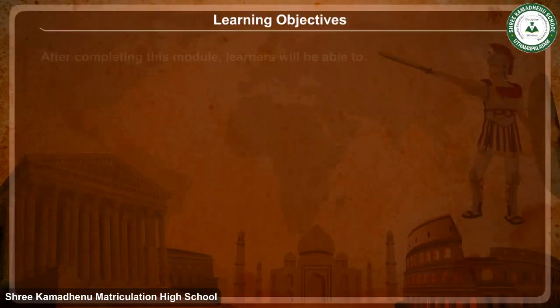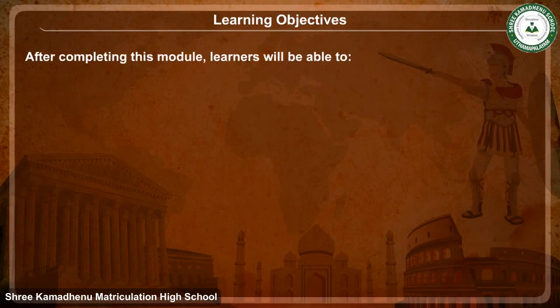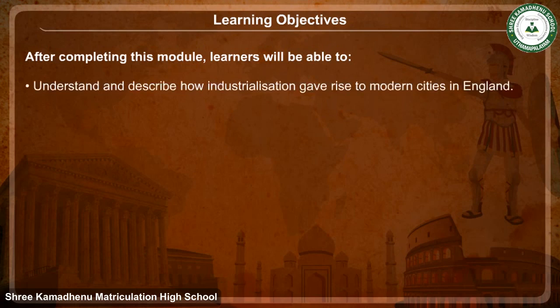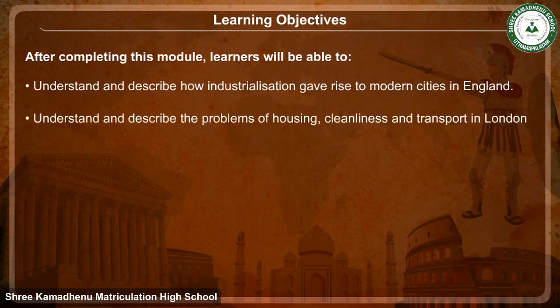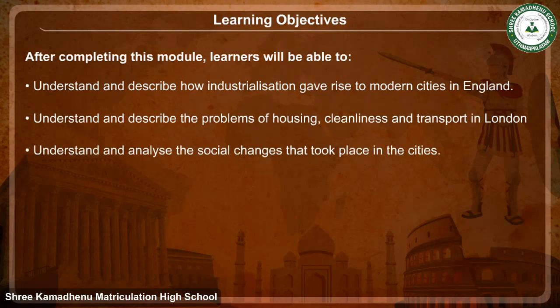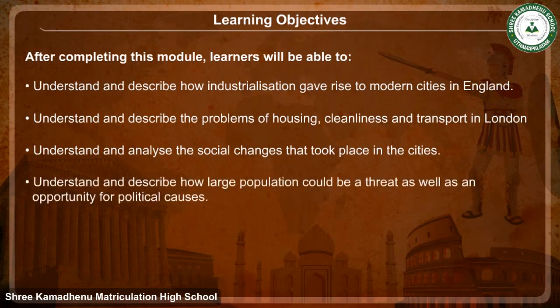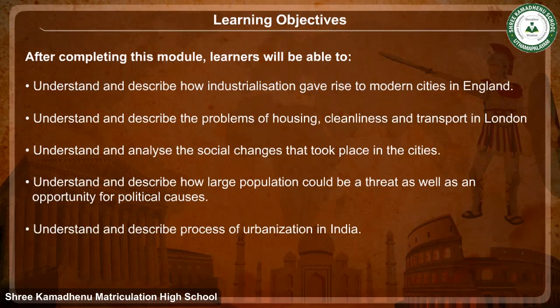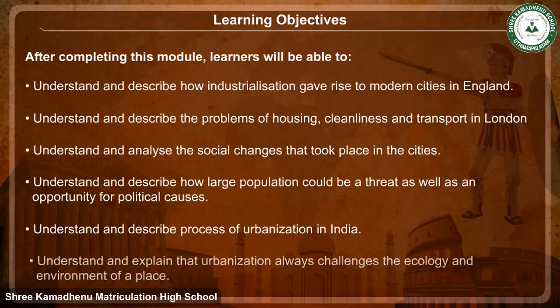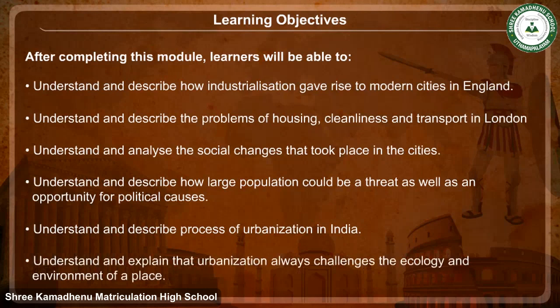Learning Objectives: After completing this module, learners will be able to understand and describe how industrialization gave rise to modern cities in England; understand the problems of housing, cleanliness and transport in London; analyze social changes in cities; understand how large populations could be a threat as well as an opportunity for political causes; understand urbanization in India; and explain that urbanization always challenges the ecology and environment of a place.